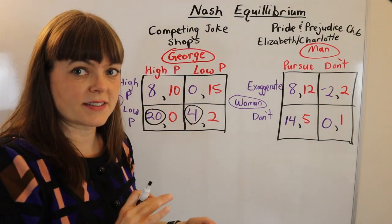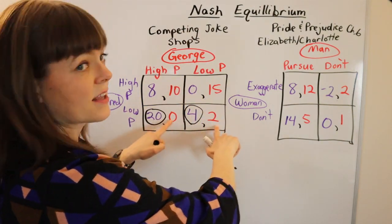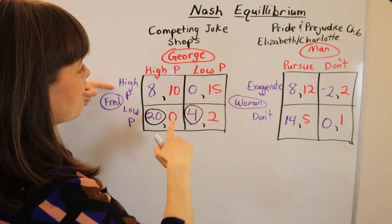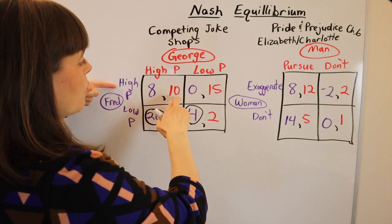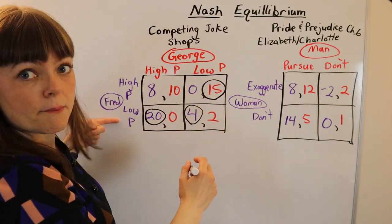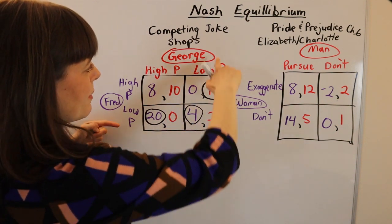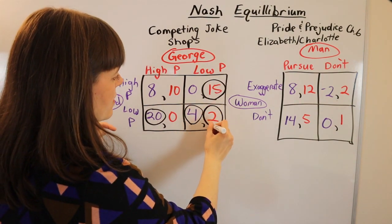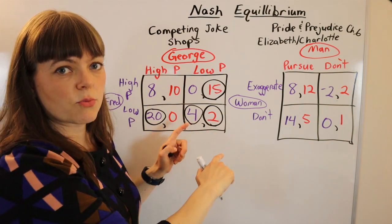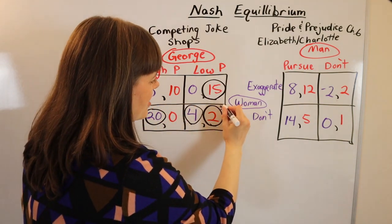Now we flip perspectives and do the whole game through George's perspective — looking only at George's payoffs but checking his competitor Fred's strategies. George says: if Fred chooses to set his price high, I prefer the 15 over the 10. If Fred sets his price low, I prefer the two over the zero — so I'd set my price low. Any box that has two circles is one where both players can say: given what the other player chose, I'm happy with my choice. So this is a Nash equilibrium.